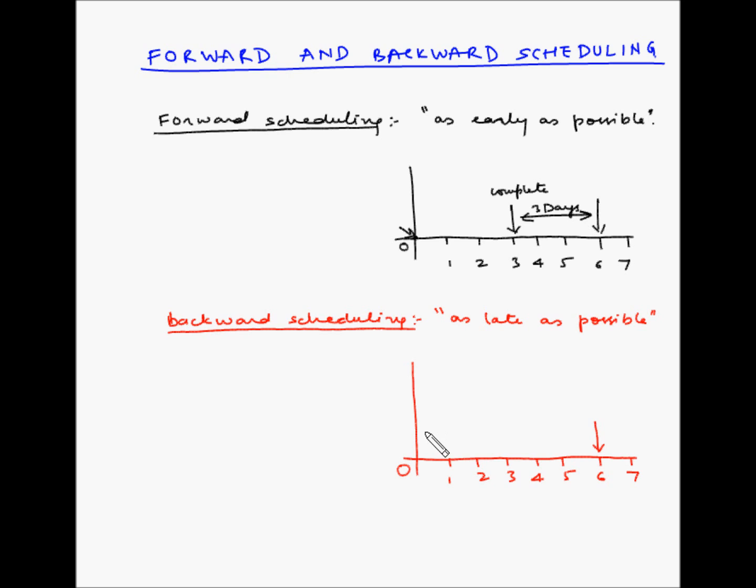So even though the machine is available for all these 6 days, we will not start processing this job on day 0. We will take the due date which is day number 6, and we will take the lead time which is 3 days to manufacture the product, and we will schedule backwards. So from 6th day, 3 days prior is day 3. So this is the time when we will start processing this job. And we will be able to complete it on day 6. Of course this has an assumption that the machine is available on all days starting from day 0.